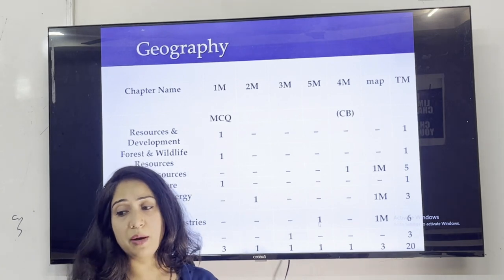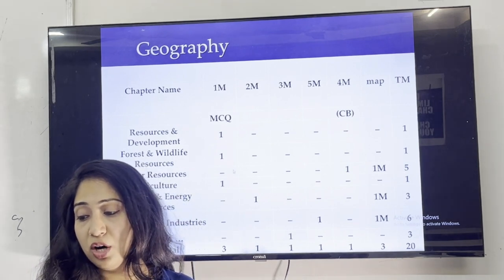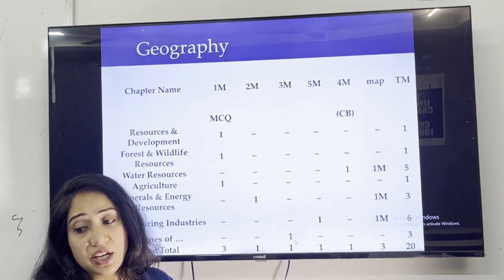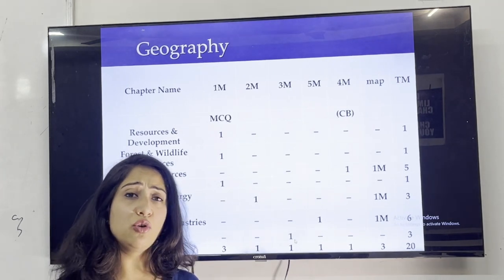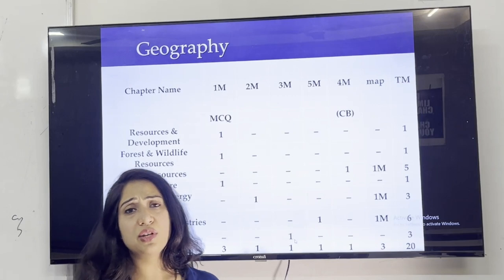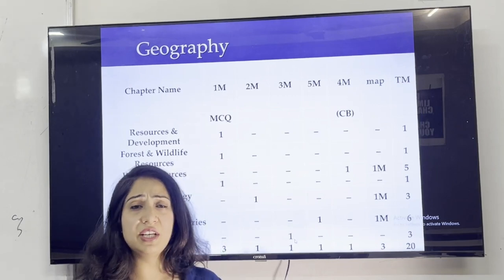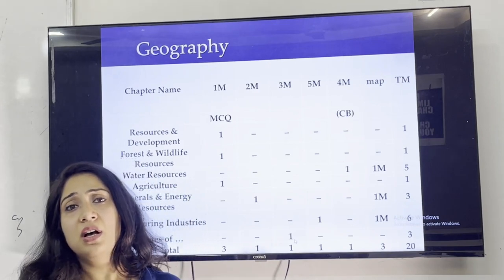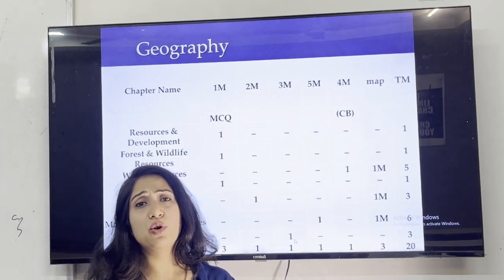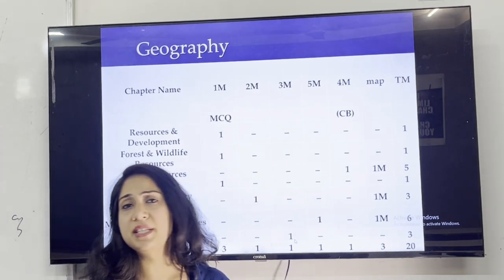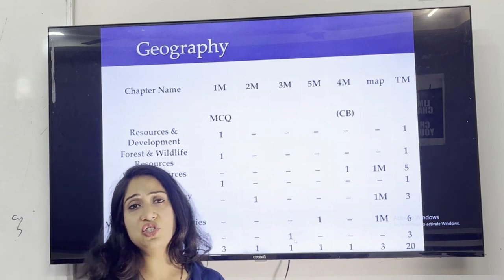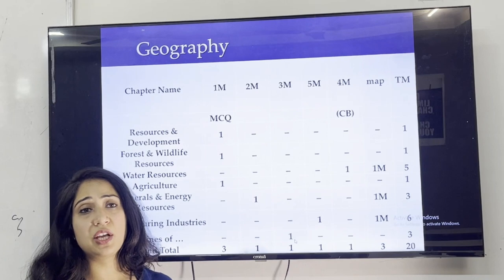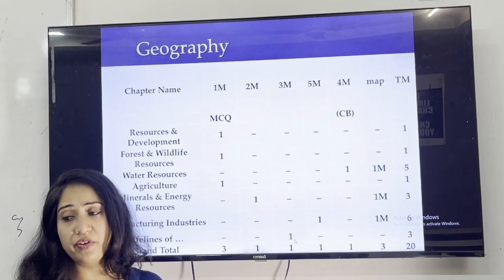Moving on, after manufacturing, you need to take the chapter Lifelines of National Economy, because roadways advantages and disadvantages, railways, pipelines, tourism as a trade, import and export as trade - these all things are very basic knowledge. If you have done this chapter, then things settle in your mind and you will be able to wind up your geography course.